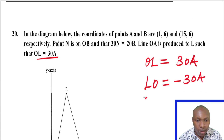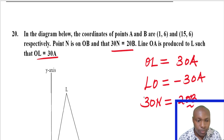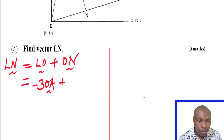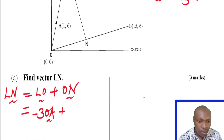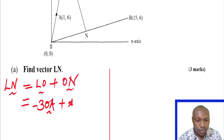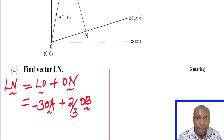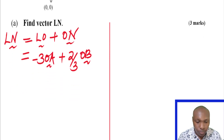So LN equals negative 3OA plus ON. For ON, we have 3ON equals 2OB. If we want to get vector ON, we divide both sides by 3 and get 2/3 OB. So ON is 2/3 OB.